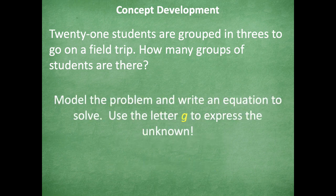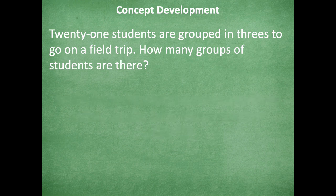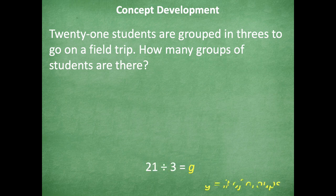Okay, so let's model the problem and write an equation to solve. Use the letter g to express the unknown. So here's my problem. 21 divided by 3 equals g. Remember, g equals the number of groups. So that's what we're trying to solve for in this problem.